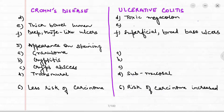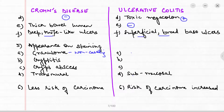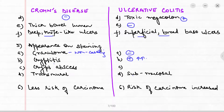Toxic megacolon is seen in ulcerative colitis but not in Crohn's. Thick bowel wall is seen in Crohn's but not in ulcerative colitis. Deep knife-like ulcers are in Crohn's; superficial broad-based ulcers are in ulcerative colitis. On staining, non-caseating granuloma is present in Crohn's but absent in ulcerative colitis. Cryptitis and crypt abscess are seen in both but are more prominent in ulcerative colitis.